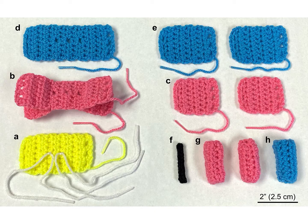Note that the strings and eyelets do not have embryonic correlates — they are the means of attaching the model pieces together. Also note that this model represents only a segment of the middle of the germ disc, not the entire disc.